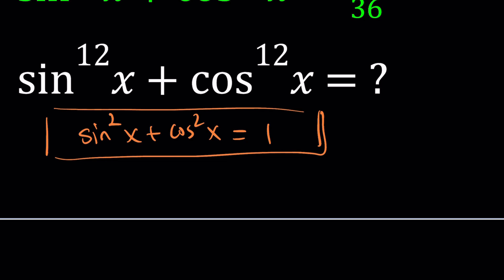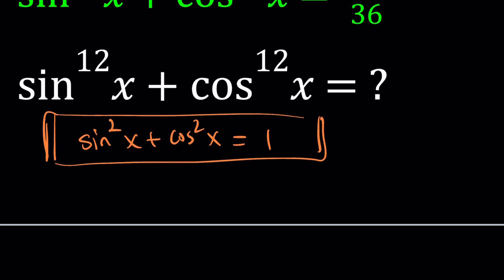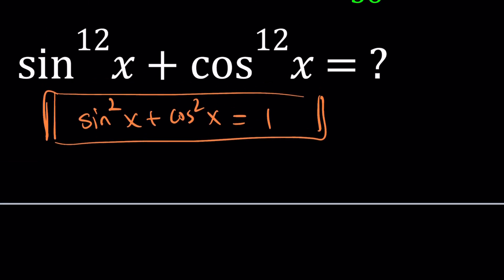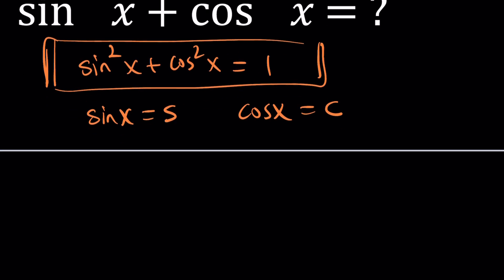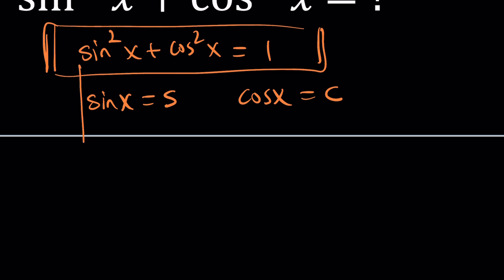So, what are we supposed to do? We have the tenth powers, we have the twelfth powers — I mean the sum — and we know that the second powers add up to one. Let's make some notation: let s equal sine x and c equal cosine x, because we're going to be writing them a lot. So our first key fact is s squared plus c squared equals 1.